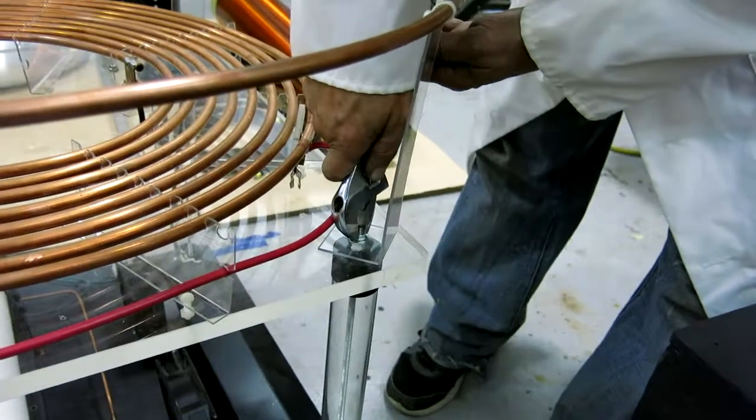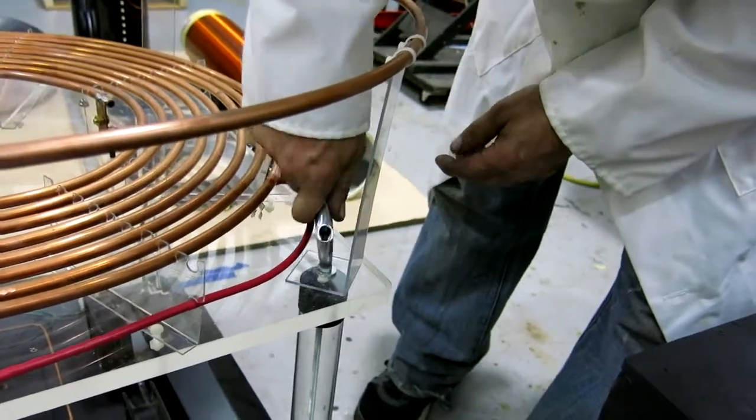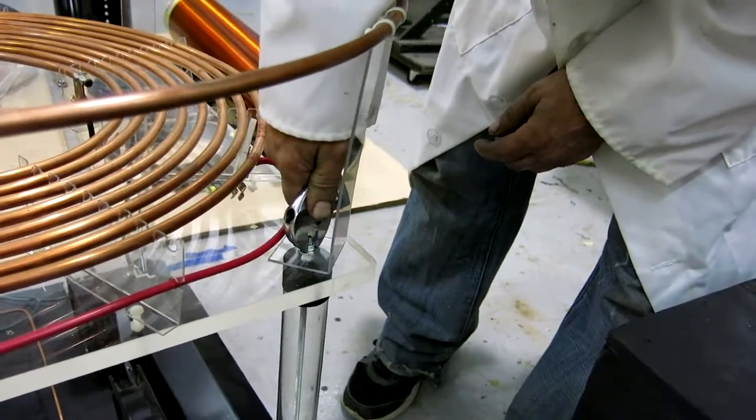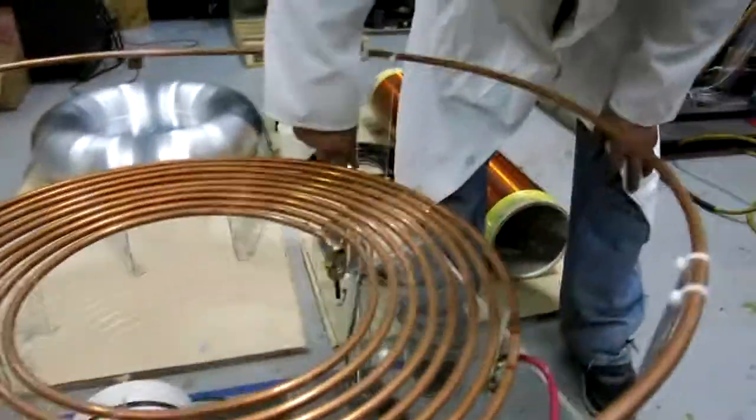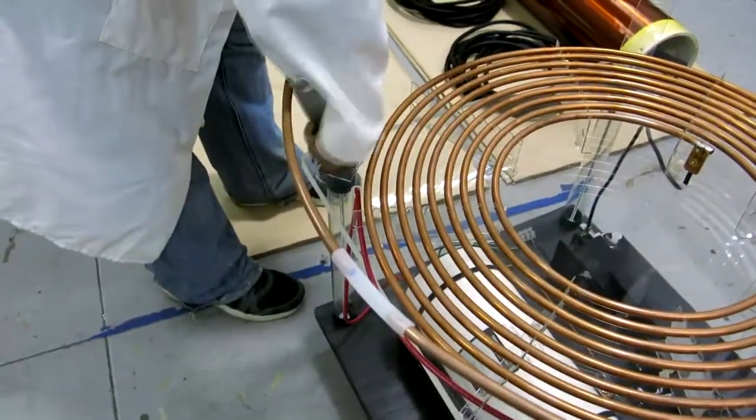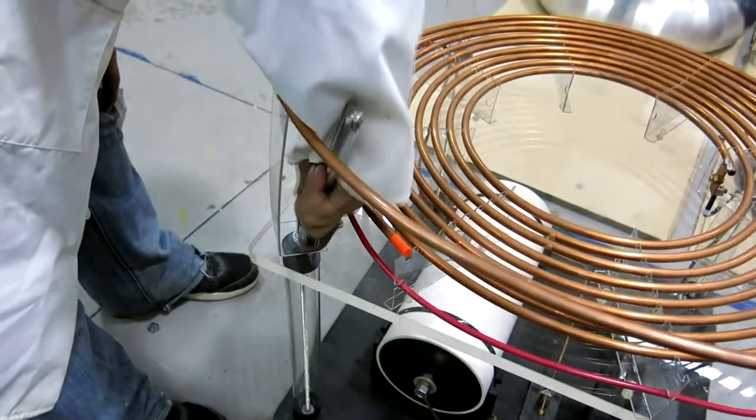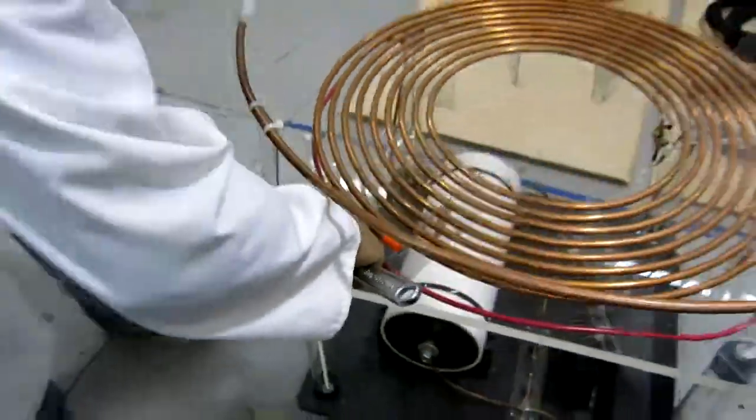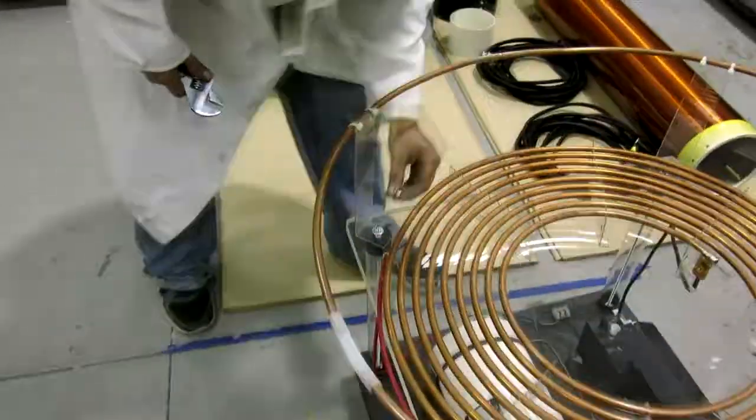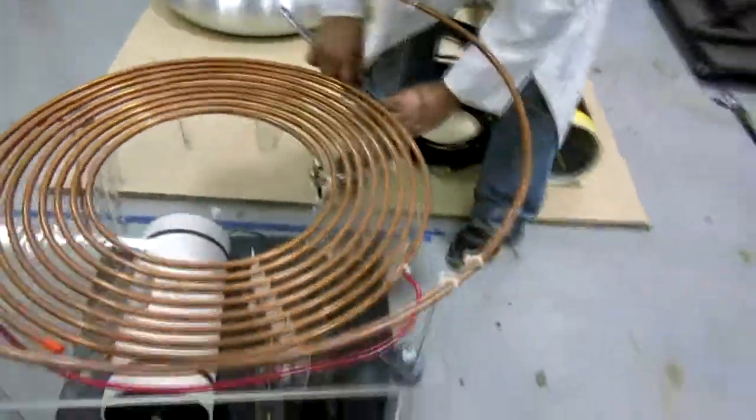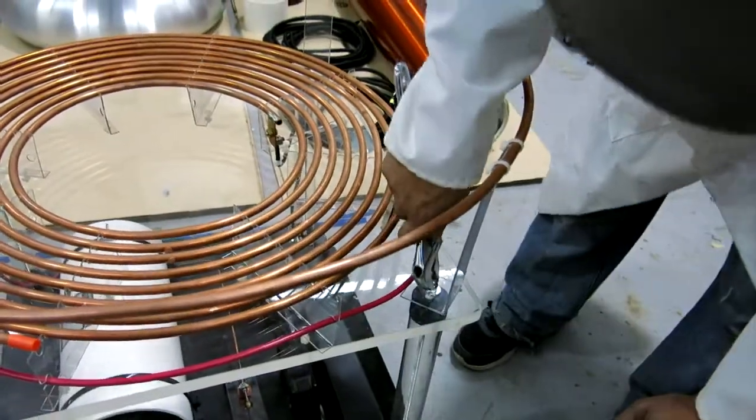Once you get it snug, it's about one turn once it's snug. It's firm. Yeah, it should be on there firm. Once we have that on there, we're going to put these acorn nuts on here for aesthetics. They just have to be on there tight enough so they don't fall off.